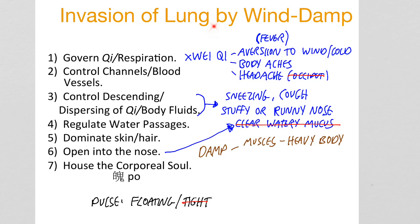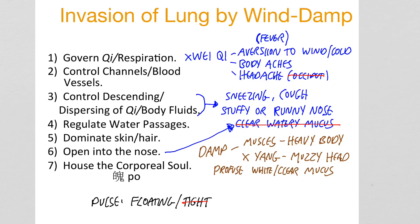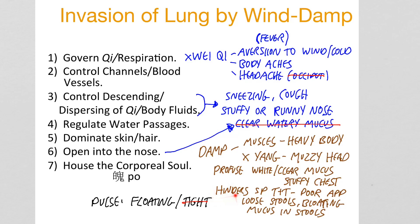If the invasion is by wind dampness, the damp gets into the muscles and gives a heavy body. It obstructs the rising of the pure yang, giving a muzzy head. We get profuse clear or white sticky mucus, a stuffy chest, and it can hinder the spleen's transforming and transporting functions, giving poor appetite.